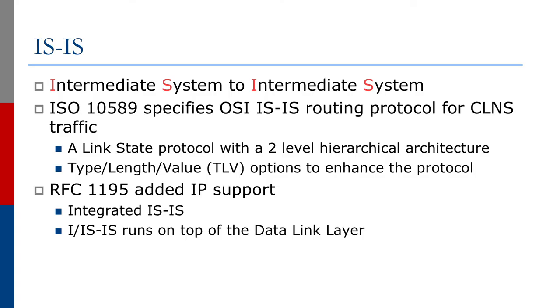We're going to spend the next few minutes introducing the IS-IS Routing Protocol. IS-IS stands for Intermediate System to Intermediate System. It's the OSI Routing Protocol for CLNS traffic, specified originally in the ISO 10589 document. It's a link state protocol with two-level hierarchical architecture, and it has type length value options to enhance the protocol.